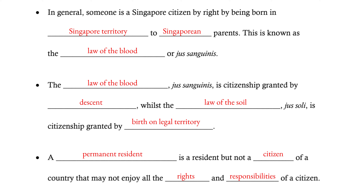Citizenship by jus sanguinis is granted by descent — your parents being citizens means you also get that citizenship, and many other countries practice the same thing. Some countries practice something called jus soli, which is the law of the soil. This is when, so long as you are born on a country's territory, you are a citizen of that country. One example is the United States — if you're born on American soil, you are legally an American citizen, no matter whether your parents are American or not.